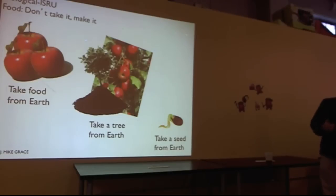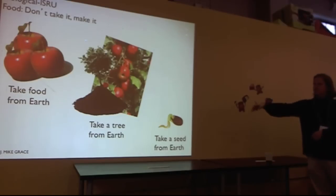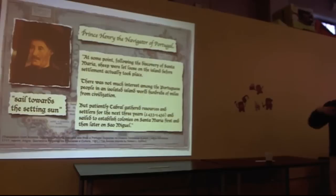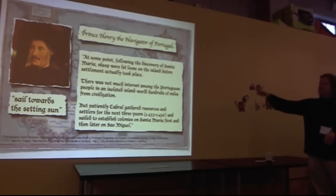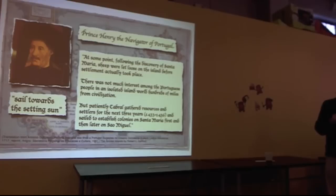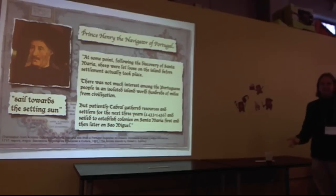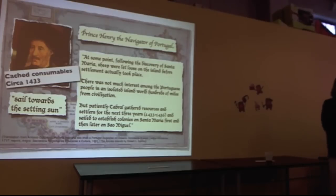ISRU, in situ resource utilization. You can take all the food from Earth with you, it's not sustainable. You can take a tree from Earth with you, but it's rather large infrastructure. Or you can take the seed. Prince Henry, the navigator of Portugal in the 14 and 1500s, there was an unwritten rule that any explorer that landed on a deserted island would leave sheep on the island. Why? So that the next person that landed on the island didn't find a deserted island, but found something that could be eaten.